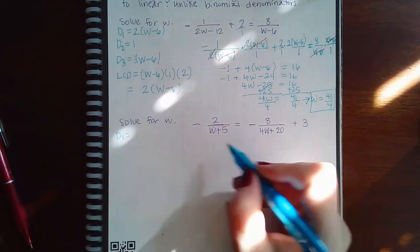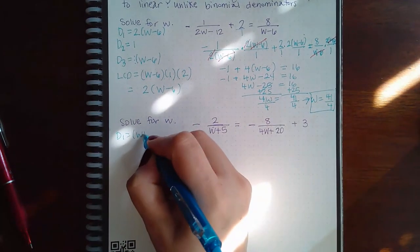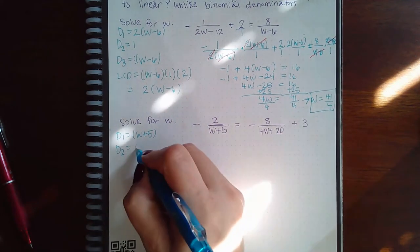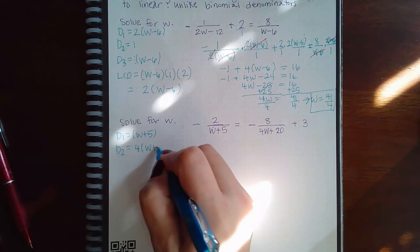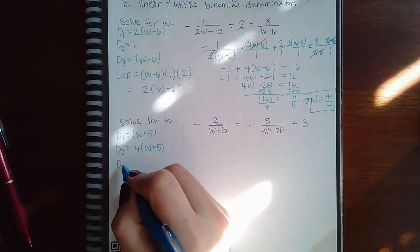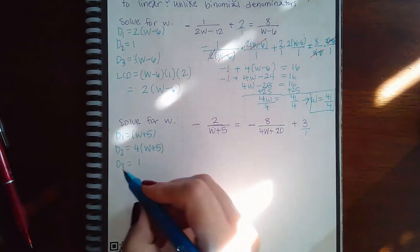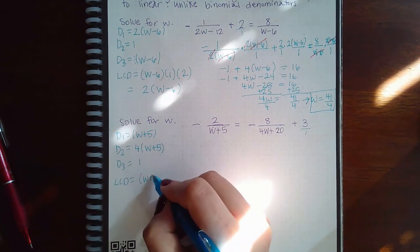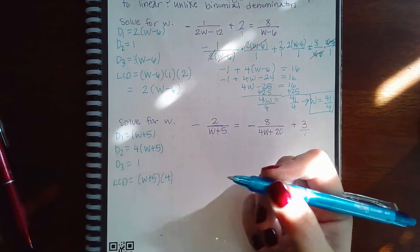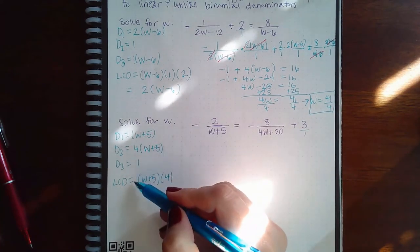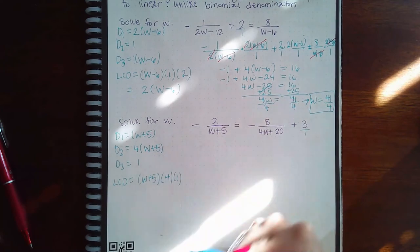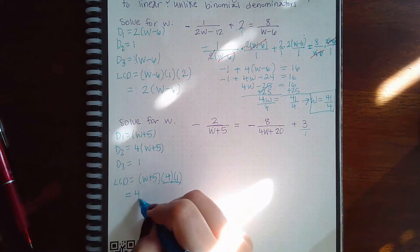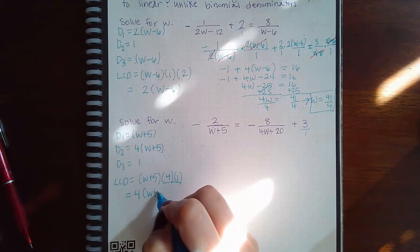So first denominator is just W plus 5. You can't factor that. Second denominator, you can factor. You can factor a 4 out, and you get W plus 5. Third denominator is just a 1. So what do they have in common? They have the W plus 5 in common. What do they have different? They have the 4 different. And you could put the 1 in the common area or the distinct area. It really doesn't matter because it's not going to change that value there. So you still end up with 4 times W plus 5.